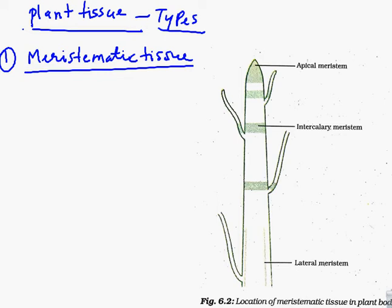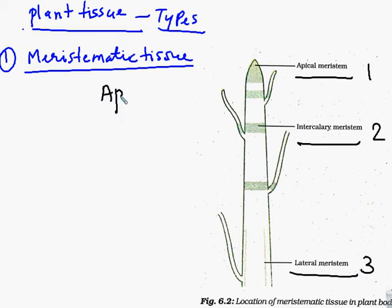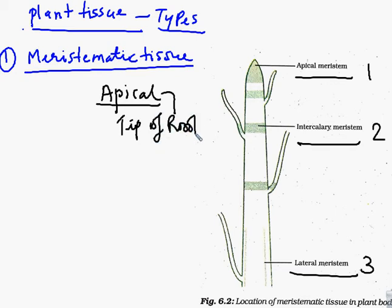First, we see about meristematic tissue. The location of meristematic tissue — meristematic tissue can be further divided into three regions. Number one: apical; number two: intercalary; number three: lateral. Apical meristems are generally present at the tips of roots and stems. This is a growing region where cells continually divide. This apical meristem is responsible for the elongation of the plant.